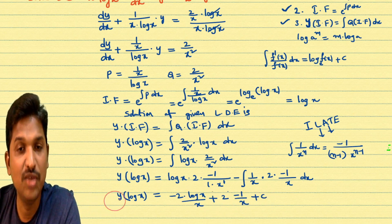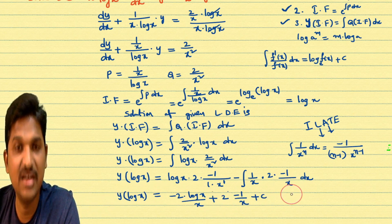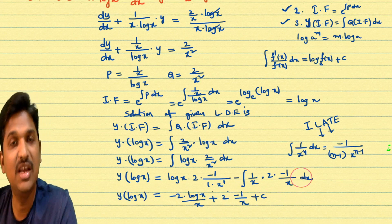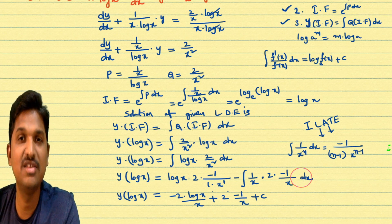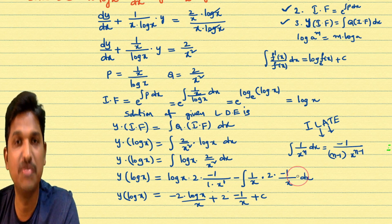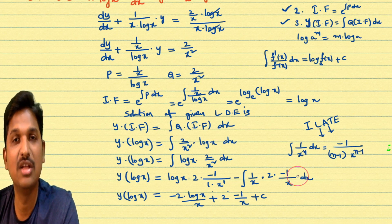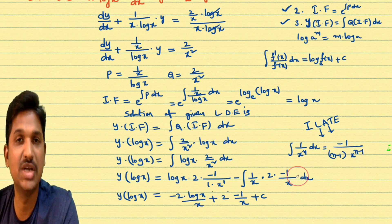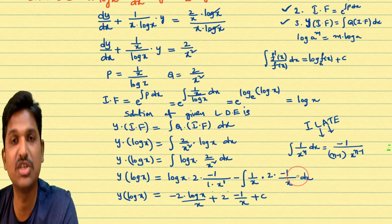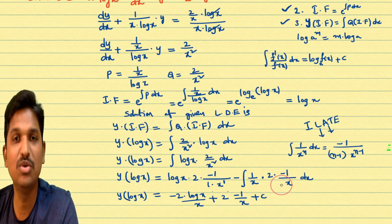Finally, we got the solution for the given linear differential equation. Solving linear differential equations is very easy — you just need to remember a few steps. First, identify it is of the form dy/dx + py = q. Then follow three steps: identify p and q; calculate the integrating factor e^(∫p dx); and write the solution y × (integrating factor) = ∫q × (integrating factor) dx.